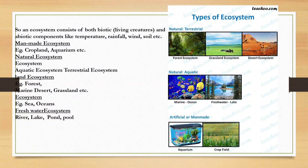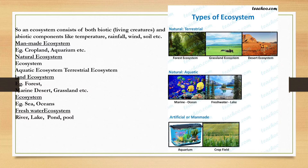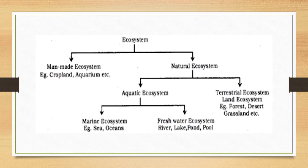There are various types of ecosystem. Man-made ecosystems include cropland, aquarium, and garden. Natural ecosystems include aquatic and terrestrial. Aquatic ecosystems can be marine — like sea and oceans — or freshwater — like rivers, lakes, and ponds. Terrestrial ecosystems include forest, desert, and grassland.